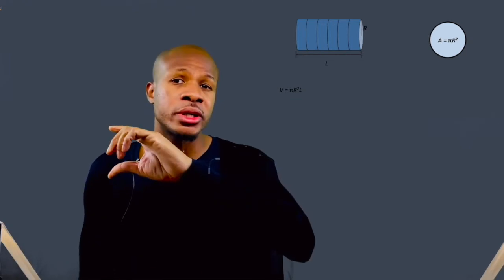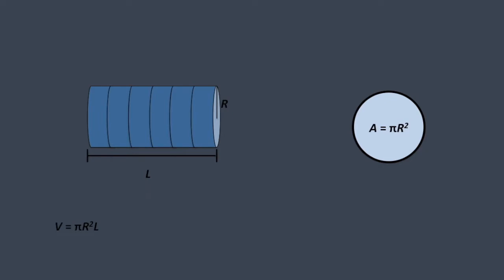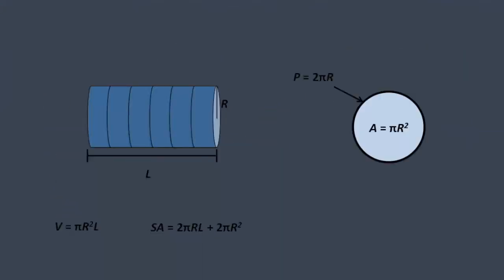The surface area of a cylinder is the space on the surface along its longitudinal section, which is made up by the perimeters of all the circles. The circumference of a circle is 2 pi r. To get the surface area, you extend that circumference over the length l, giving you 2 pi r times l. That's just the longitudinal surface area. You can add the two circular caps, each contributing pi r squared, giving a total of 2 pi r l plus 2 pi r squared.